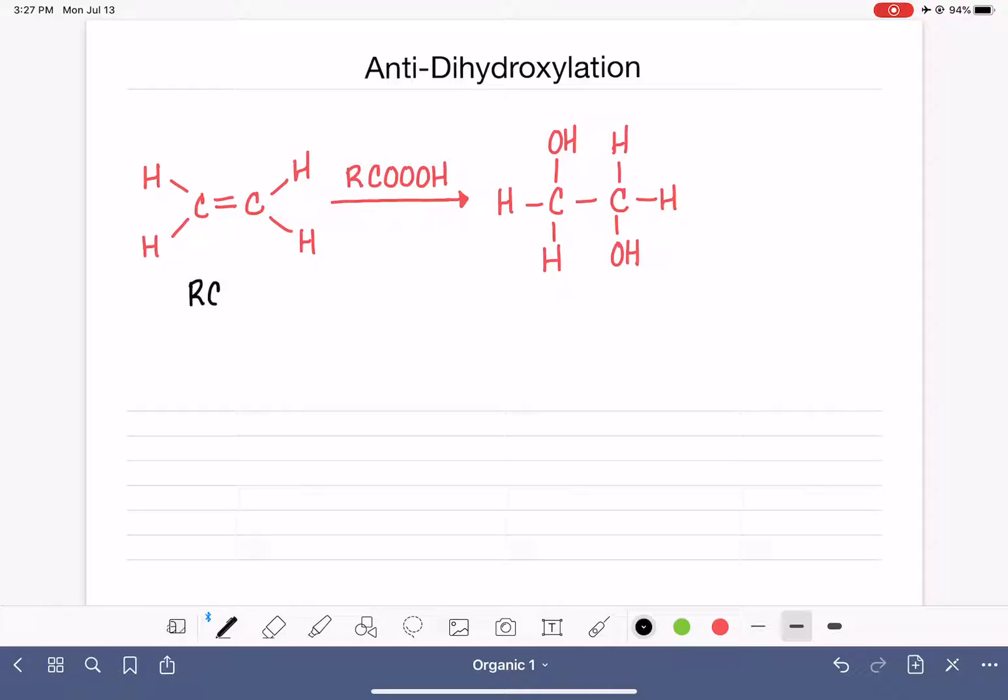There are three common versions of RCO3H. This would be just a generic formula for a peroxy acid. I want to start by drawing what this actually would look like. So this is kind of like a carboxylic acid slash peroxide mixed together. It's got that extra oxygen in there.